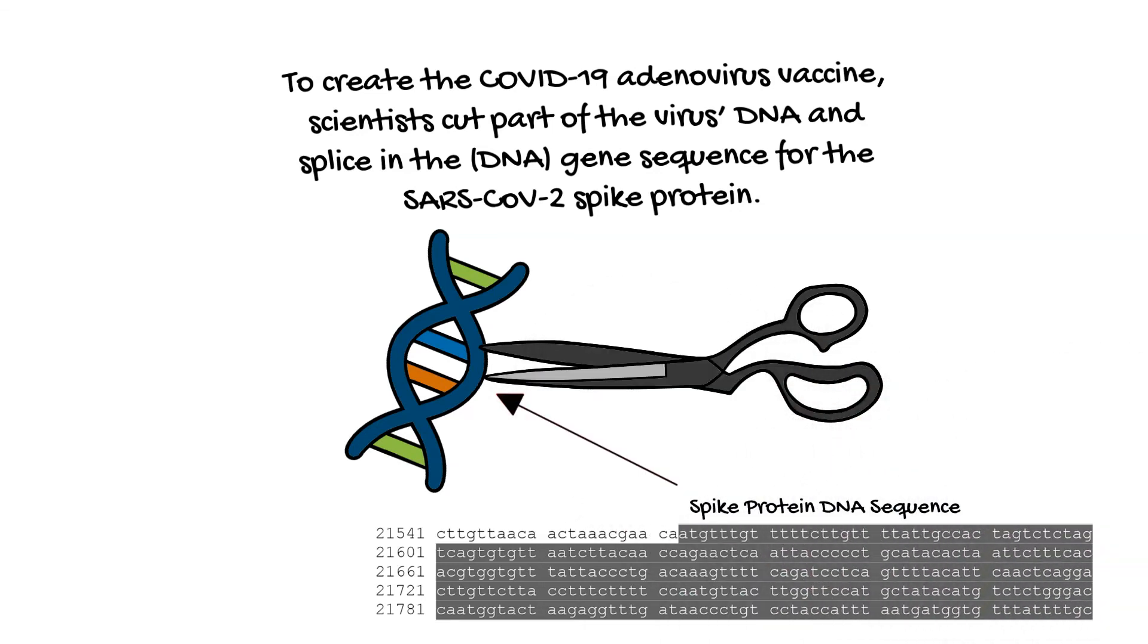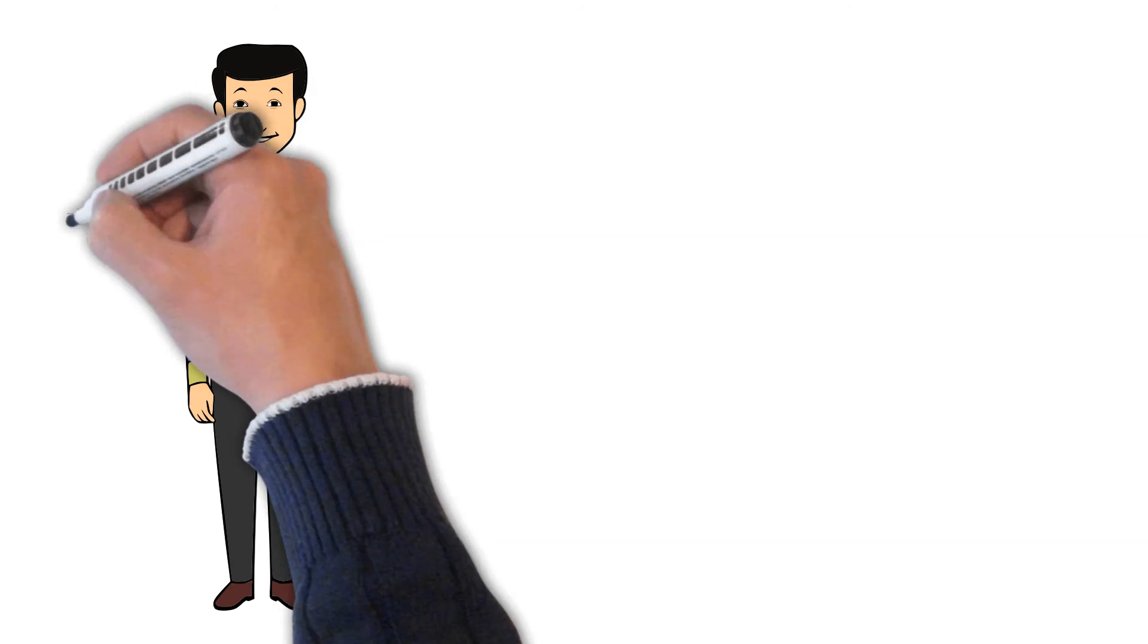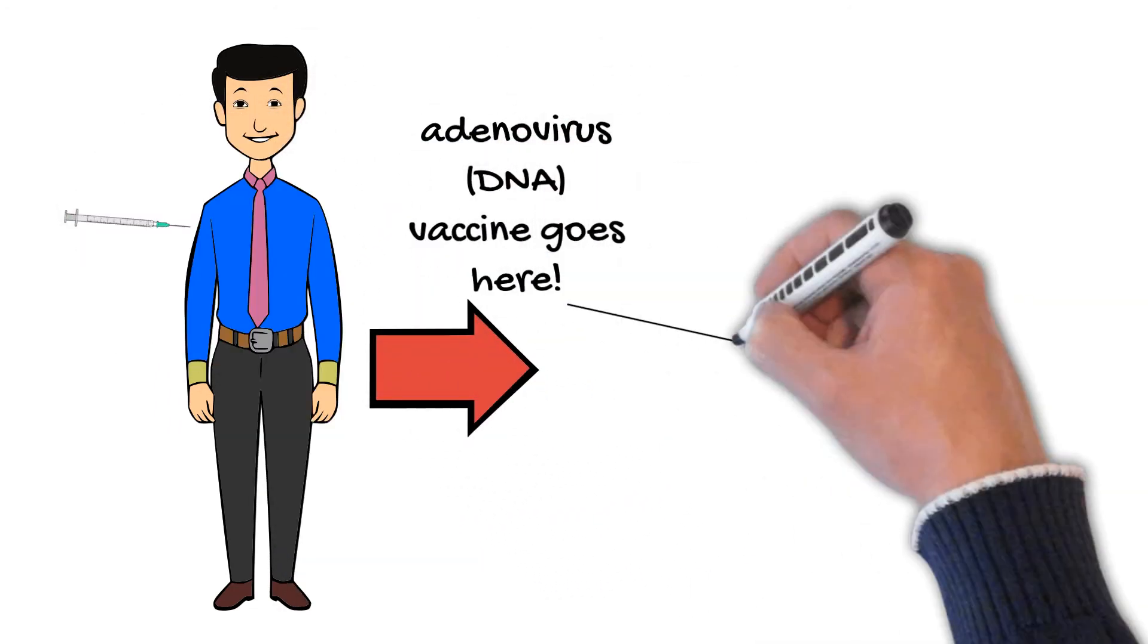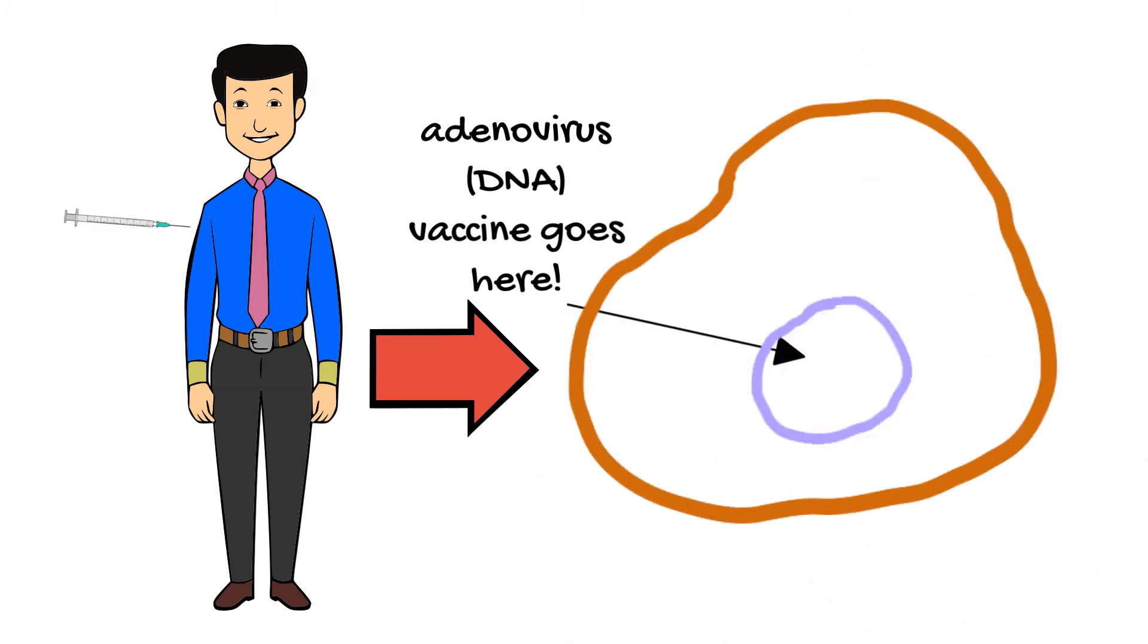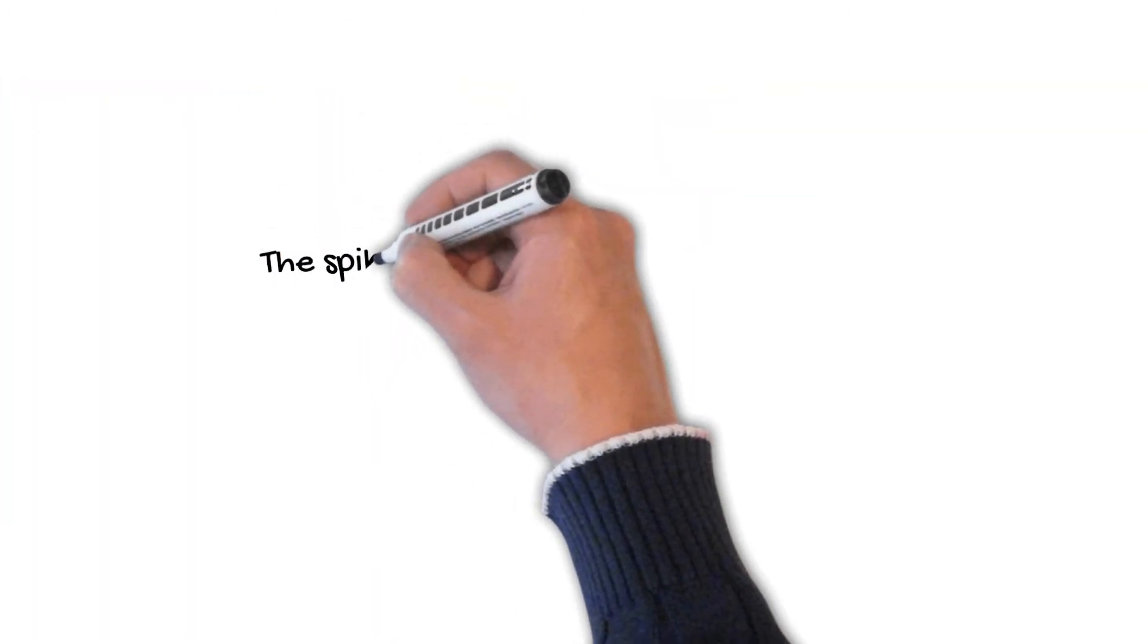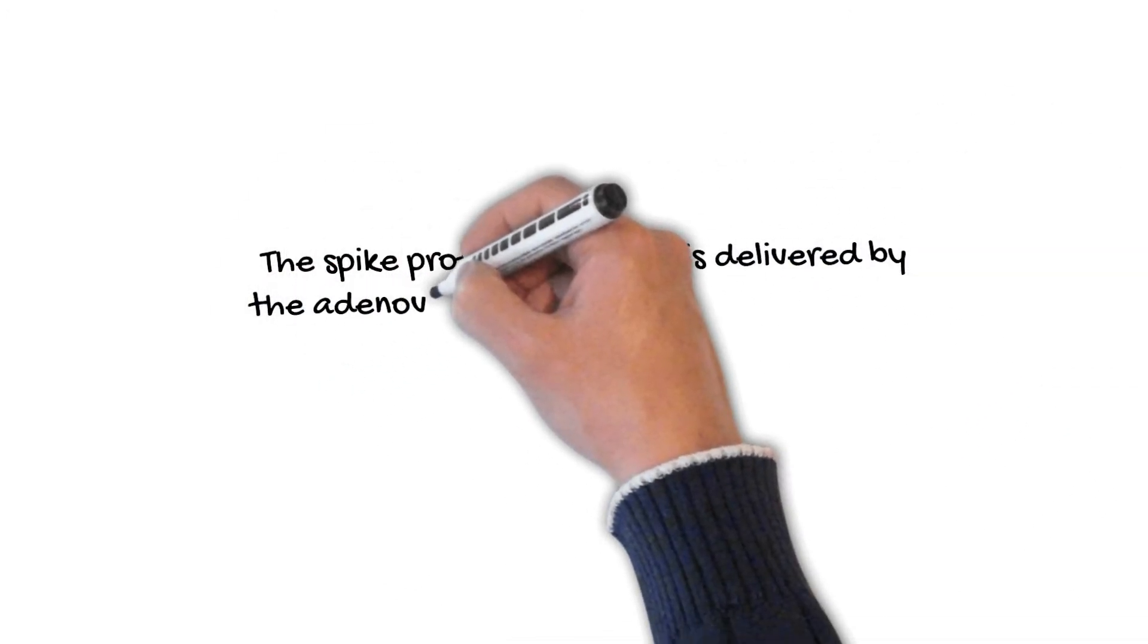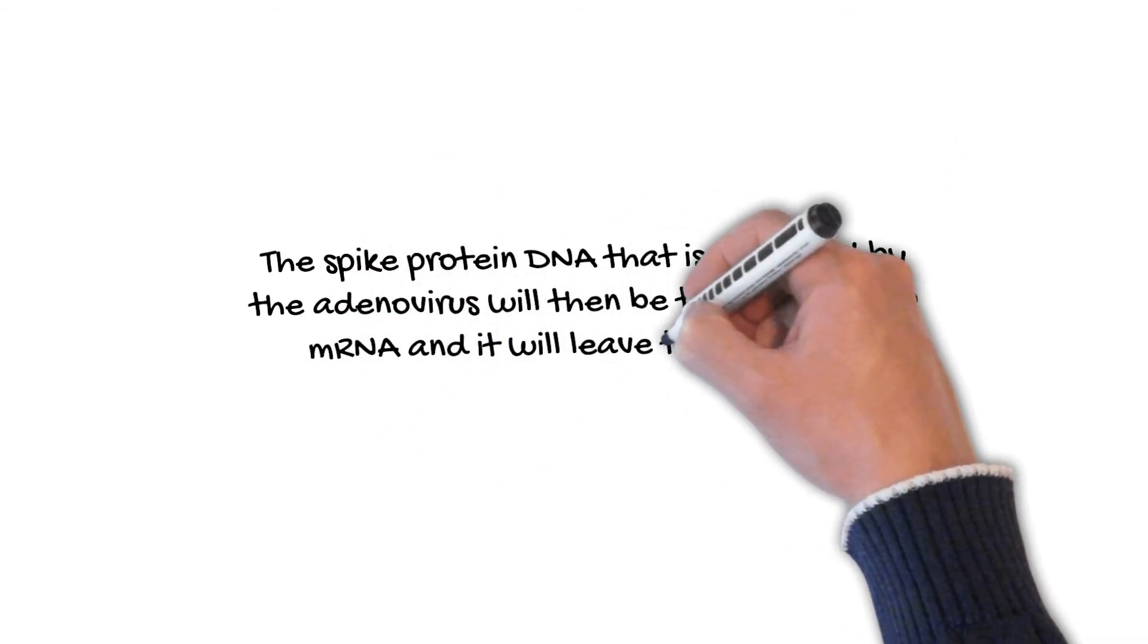After the patient is given the injection, the viral vector vaccine will then deliver that engineered DNA that includes the DNA sequence for the spike protein into the muscle. The muscle cells will take up that engineered adenovirus but not cause disease or replicate, remember, because it's engineered not to do that. The spike protein DNA that's delivered by the adenovirus will then be transcribed into mRNA and it will leave the cell to be translated into the S protein.